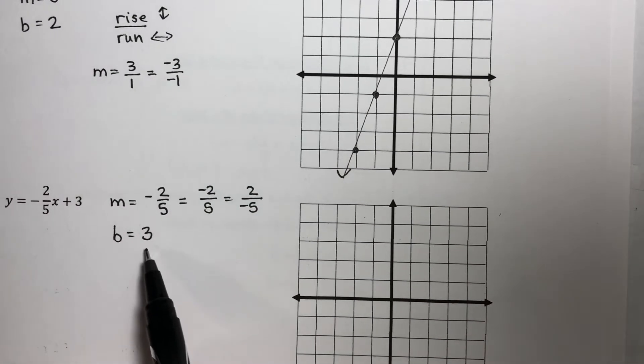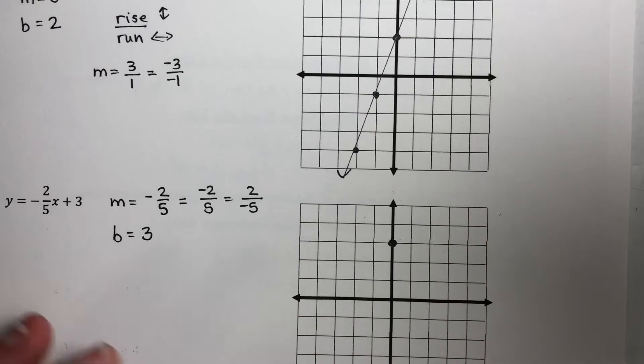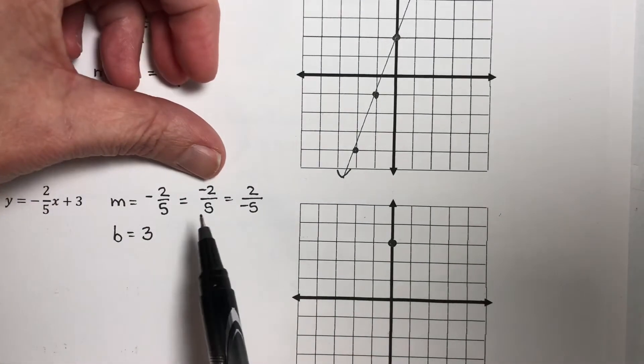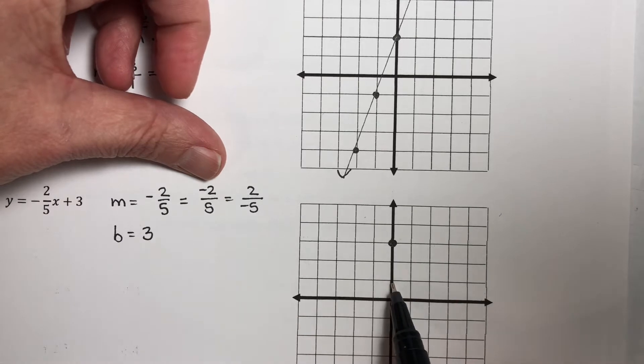So let's start off. We're given the fact that we cross our Y axis at 3. So this is our starting point right here. Now I'm going to follow these directions first. My rise is negative 2, so I go down 2. And I run positive 5.